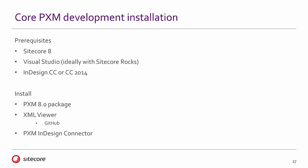For our core PXM development installation, the prerequisites are the following. Obviously you need to have Sitecore installed — in this case, Sitecore 8. You need Visual Studio, as we'll be doing some custom coding even in the simplest PXM examples. And lastly, you either need InDesign CC or CC 2014. Adobe offers a 30-day trial. If you have InDesign CS6, as per the previous slide on versioning, you may wish to install an older version of PXM on top of an older version of Sitecore.